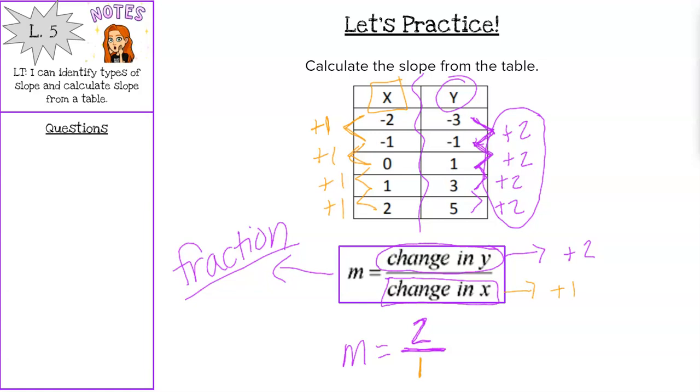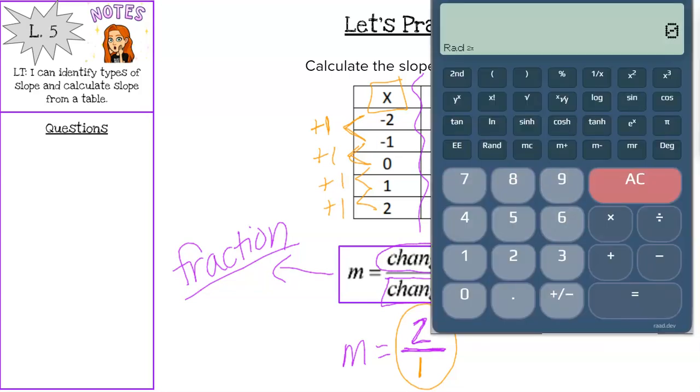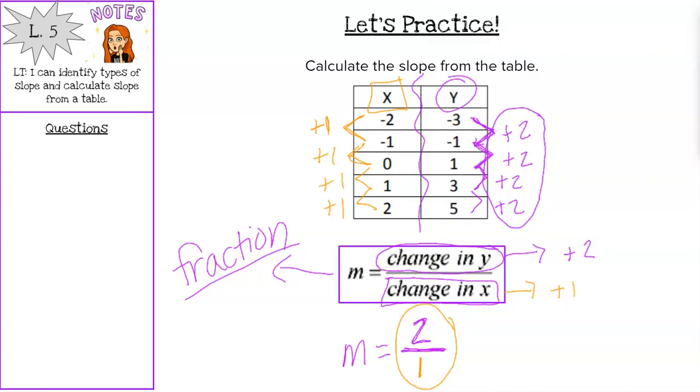So I would put a one on the bottom of my fraction. And we always have to ask ourselves, can we simplify that fraction two over one? Well, that just means divide. Two divided by one, two divided by one is just that two. So really, our slope is two. So m equals two.